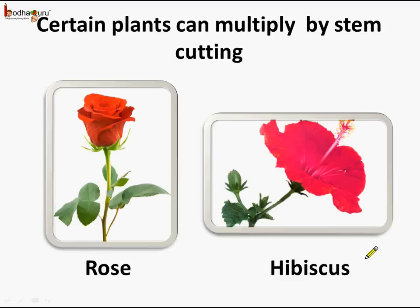What are the other uses of stem? In certain plants, the stem cutting can grow into another plant. Stem cutting is the way by which plant multiplication takes place in certain plants — like in the case of rose and hibiscus, a stem cutting can grow into another plant.